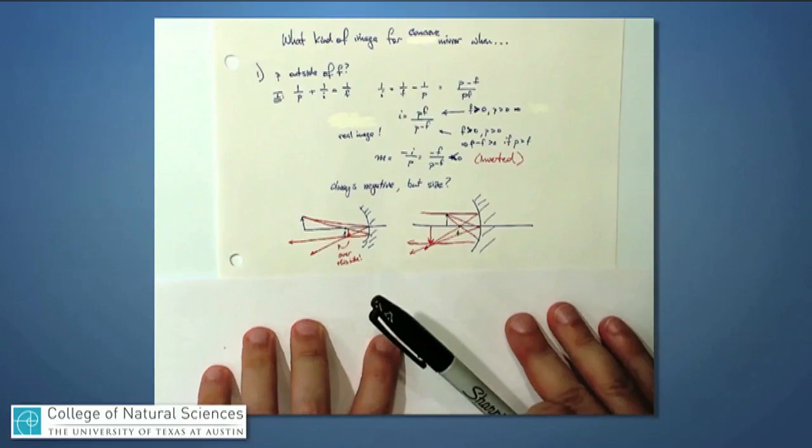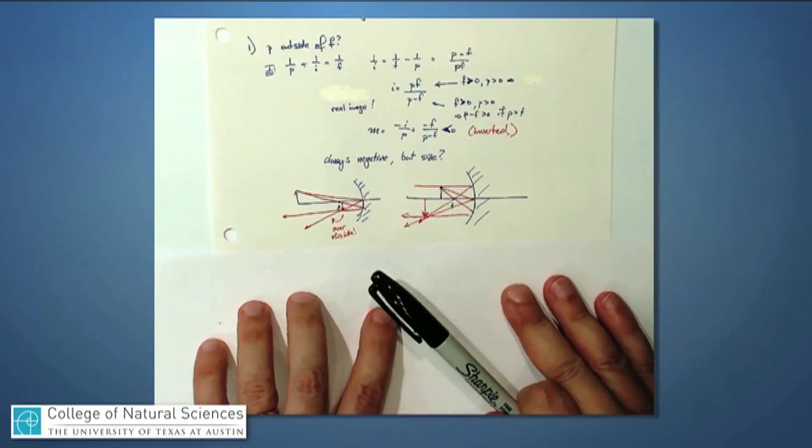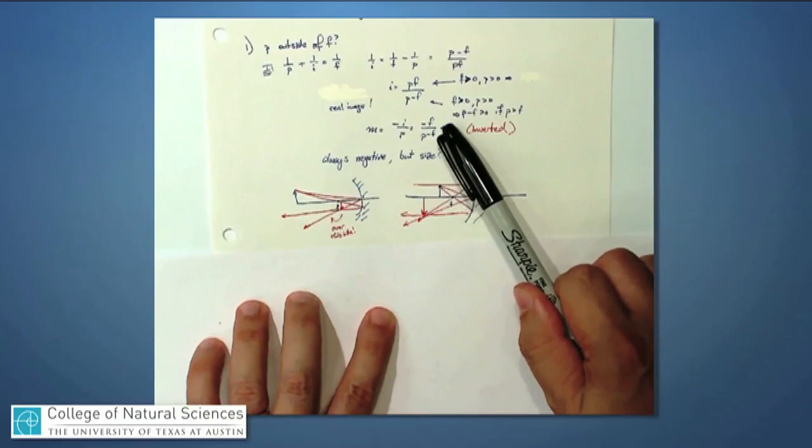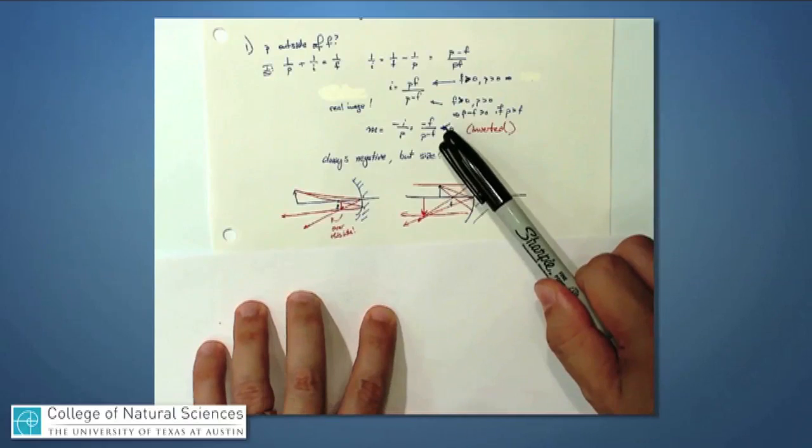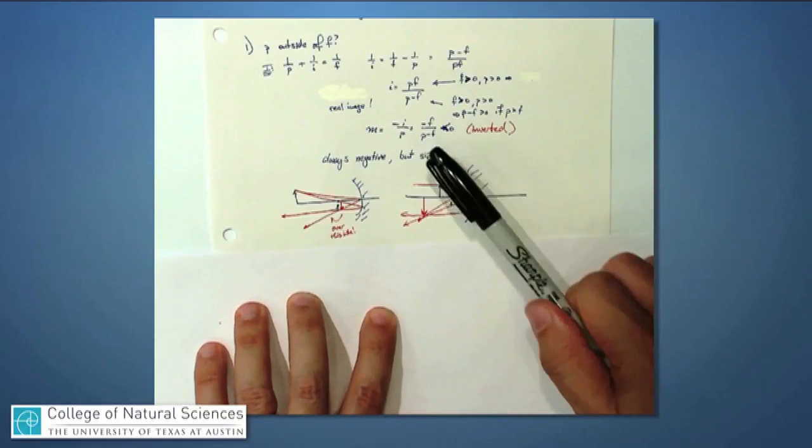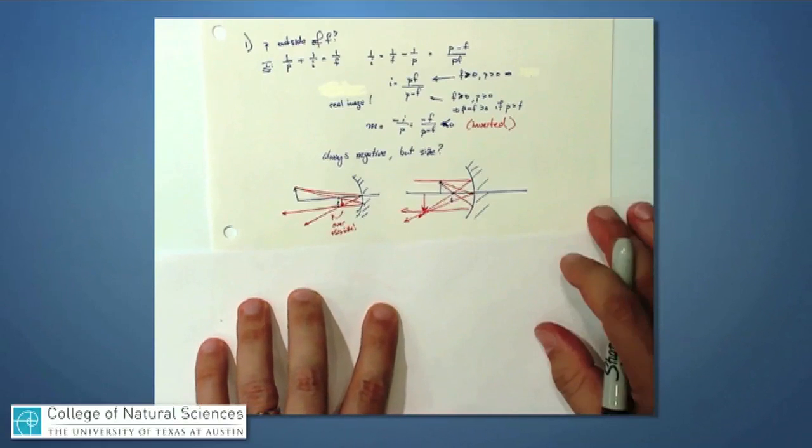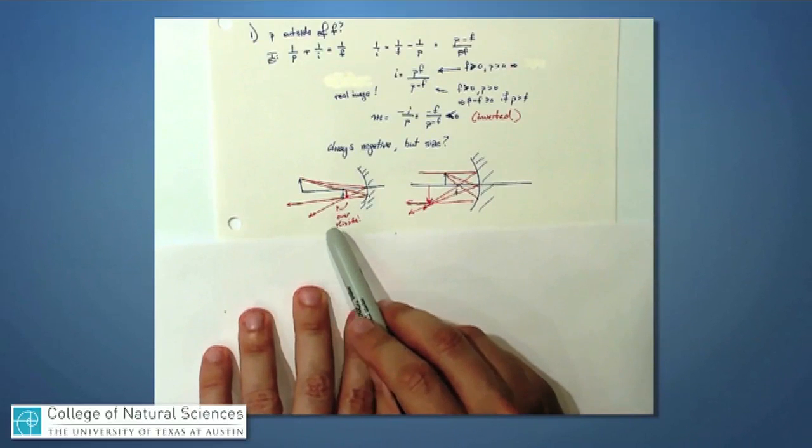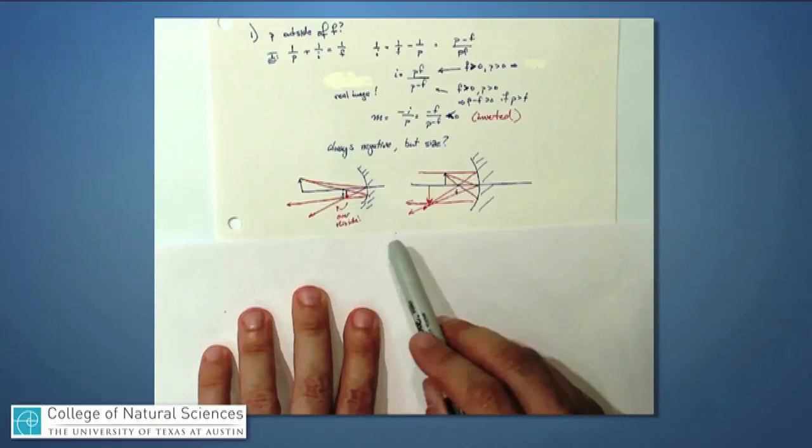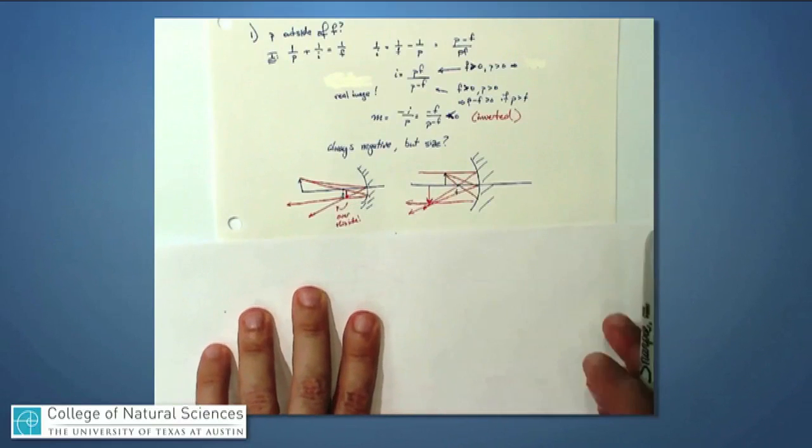Now how big will it be? Well that depends. It depends on this ratio if it's bigger than one or less than one. It depends on just how far away p is. So I can have cases where the image will be a little bit smaller, I can have cases where the image will be a little bit bigger.